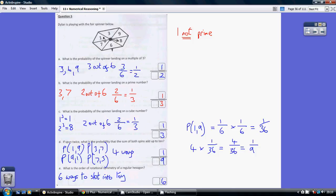How many sides do we have? 1, 2, 3, 4, 5, 6, so it's 3 out of 6. Write that as a fraction and simplify it, dividing top and bottom by 3, that's a half. So the probability of landing on a multiple of 3 is a half.